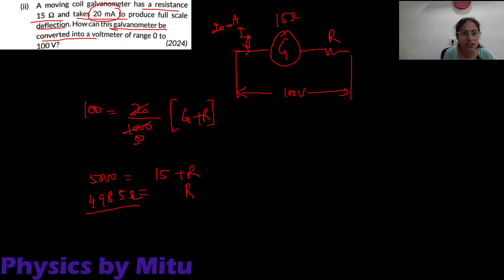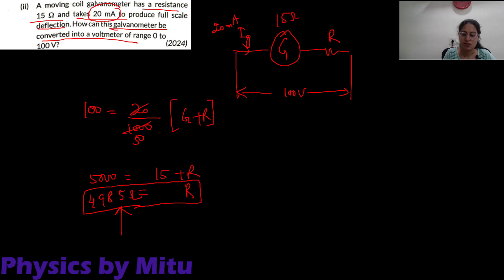The question asks: how can this galvanometer be converted into a voltmeter? By connecting a resistance of 4985 ohm in series, we can convert the galvanometer into a voltmeter.